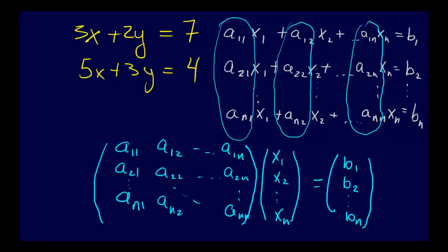And so applying this to our particular example that we had right here, we simply come up with 3, 2, 5, 3, x, y equals 7, 4. So that's it, that's the way that you go from a system of equations to a matrix.